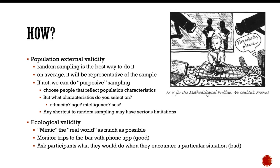So how do we make it happen? How do we ensure that we have good population validity? So for population external validity, the best way to ensure that we have it is by random sampling. Now remember the difference between random sampling and random assignment.